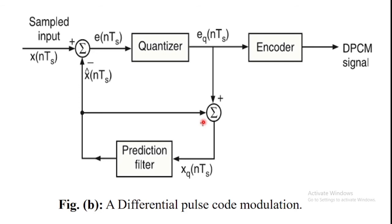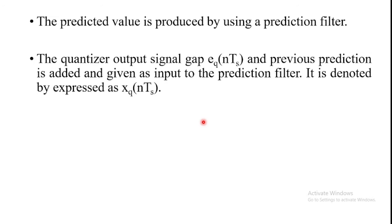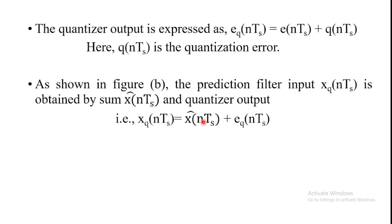From the figure, we can observe that the error signal EQ(nTs) is very small and can be encoded using a smaller number of bits. Thus, the number of bits per sample is reduced in the differential pulse code modulation technique. Therefore, the quantizer output can be written as EQ(nTs) = E(nTs) + Q(nTs), where Q(nTs) is the quantization error.